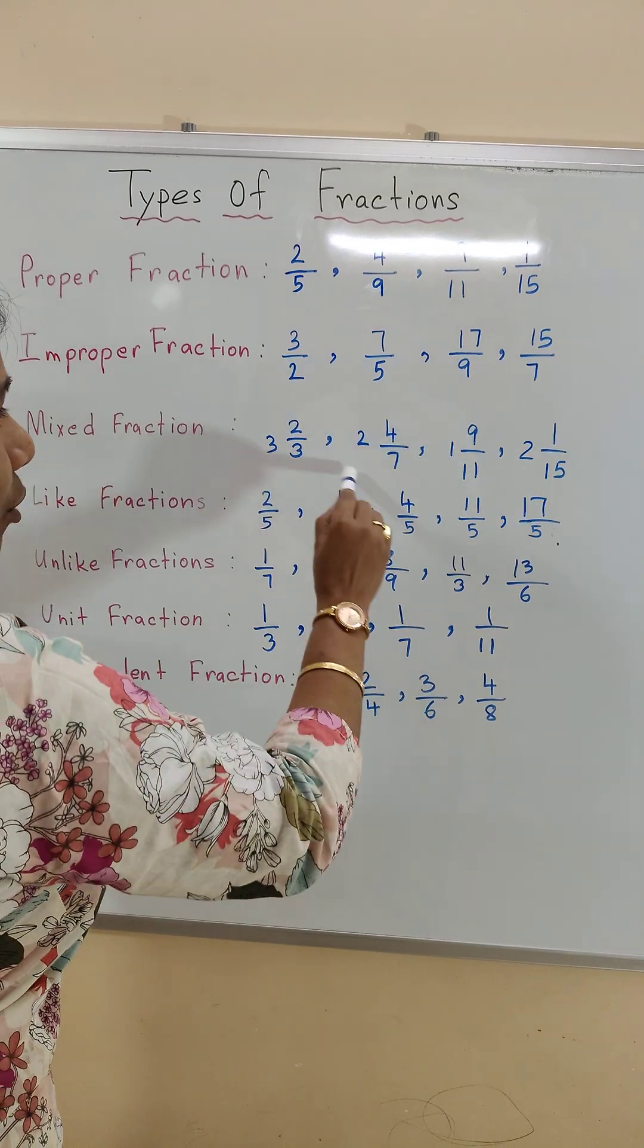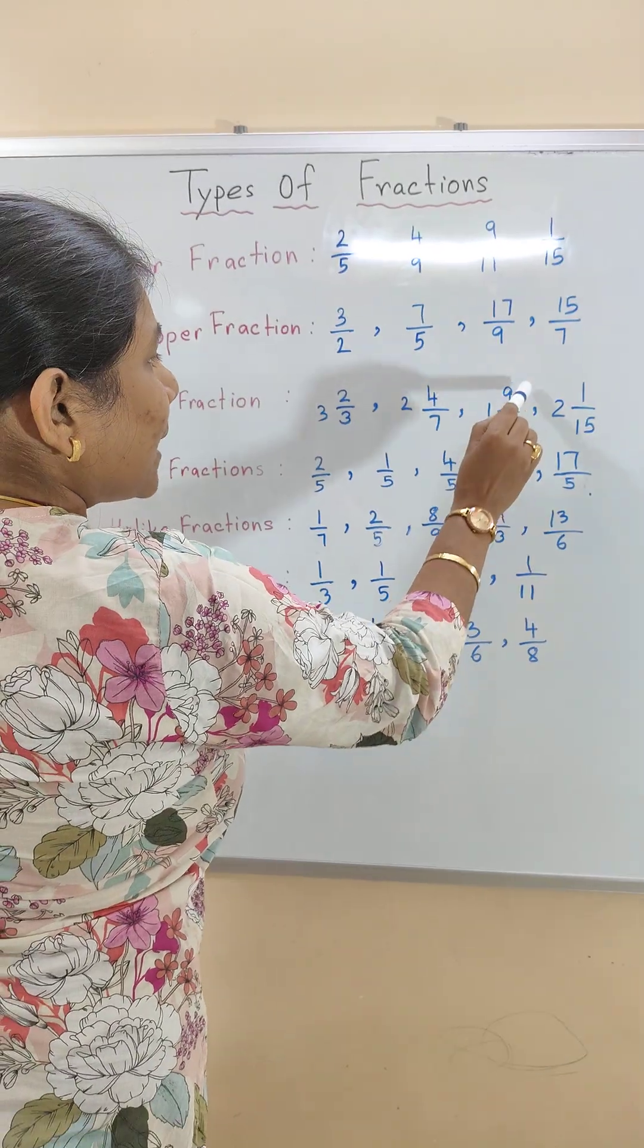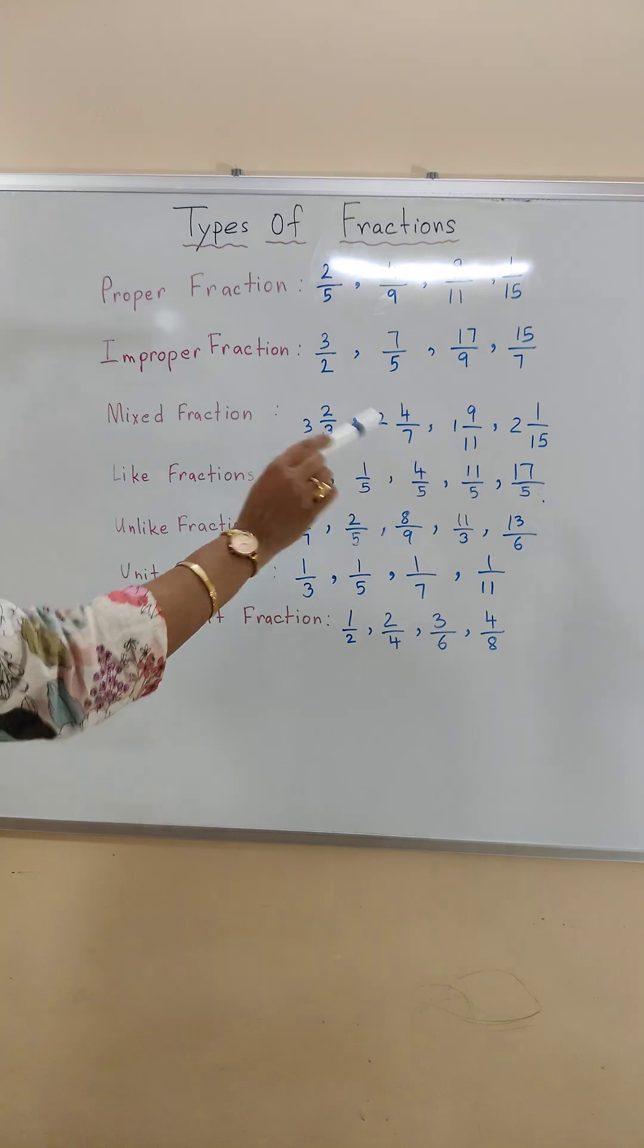So similarly, these are all examples of mixed fraction: 2 and 4 by 7, 1 and 9 by 11, 2 and 1 by 15 are the examples of mixed fractions.